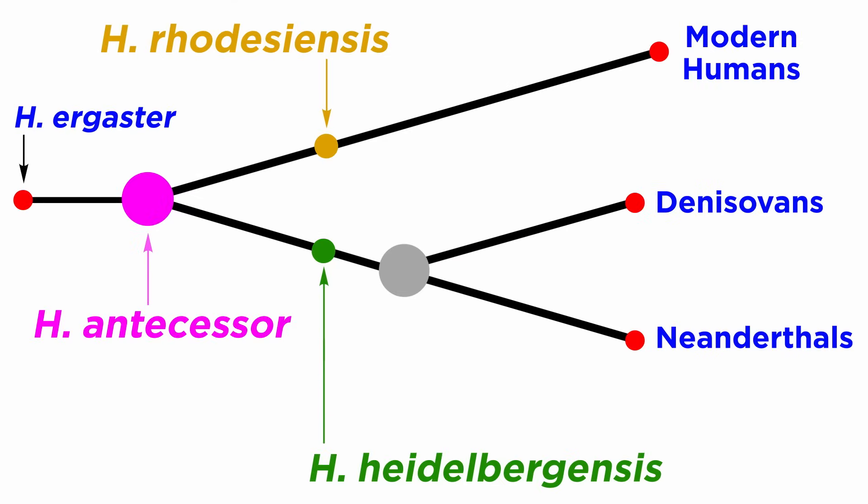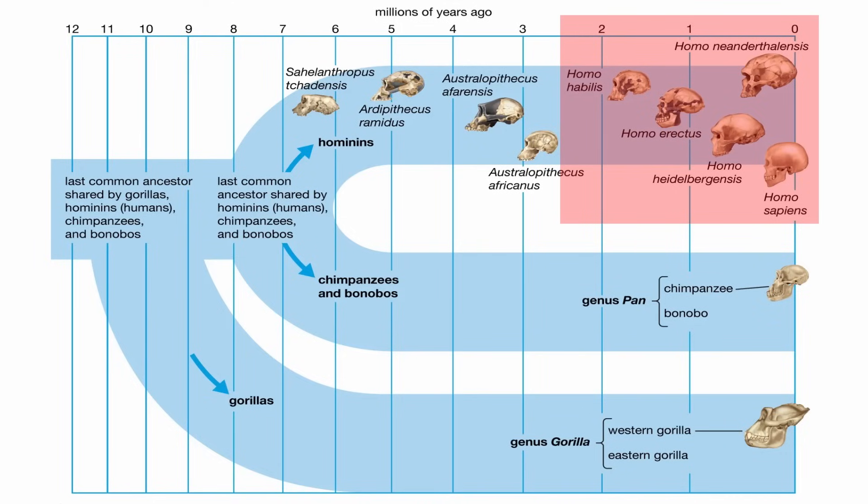While the details of how each of these potential species are connected are hazy, there is no doubt that the series of individual specimens we have span the morphologic difference between earlier hominins and the three big contenders of the late Pleistocene. Let's now continue to move forward within the genus Homo.